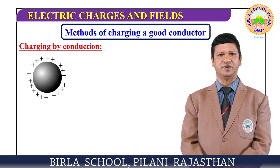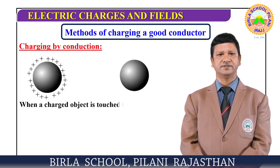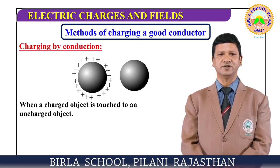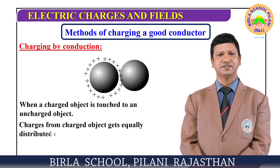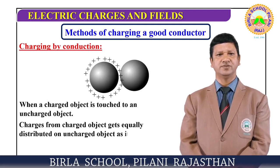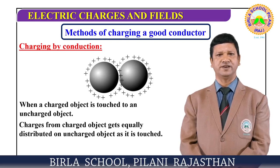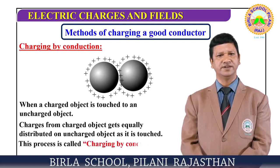In charging by conduction, a charged body comes in physical contact with the uncharged body. During this process, the charge from the charged object gets equally distributed on the uncharged object when it touches. This is the method of charging a body by conduction.